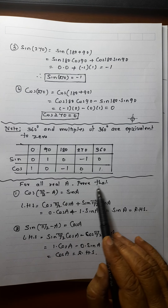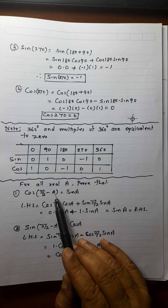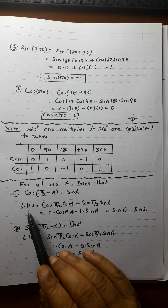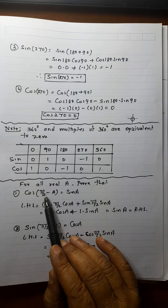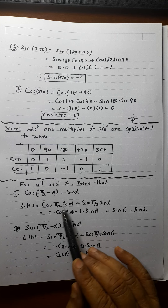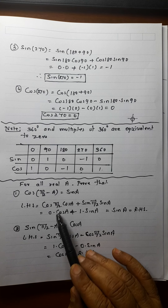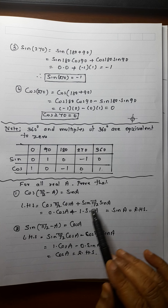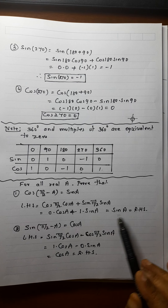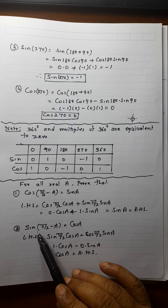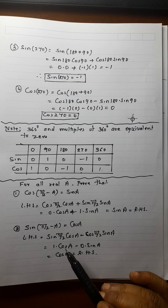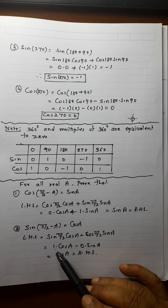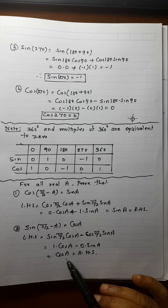For all real A, prove that cos(π/2 − A) = sin A. Using the cos(A−B) formula: cos A cos B plus sin A sin B. So cos(π/2)·cos A plus sin(π/2)·sin A. Cos 90° is 0 and sin 90° is 1, so the answer is sin A. Similarly, sin(π/2 − A) = cos A. Using sin(A−B): sin A cos B minus cos A sin B. Sin(π/2) is 1 and cos(π/2) is 0, so it equals cos A.